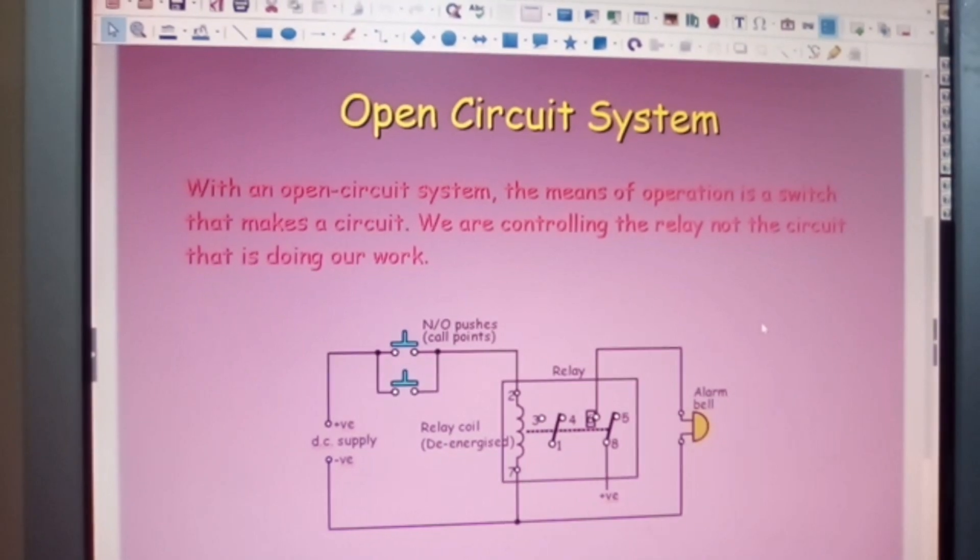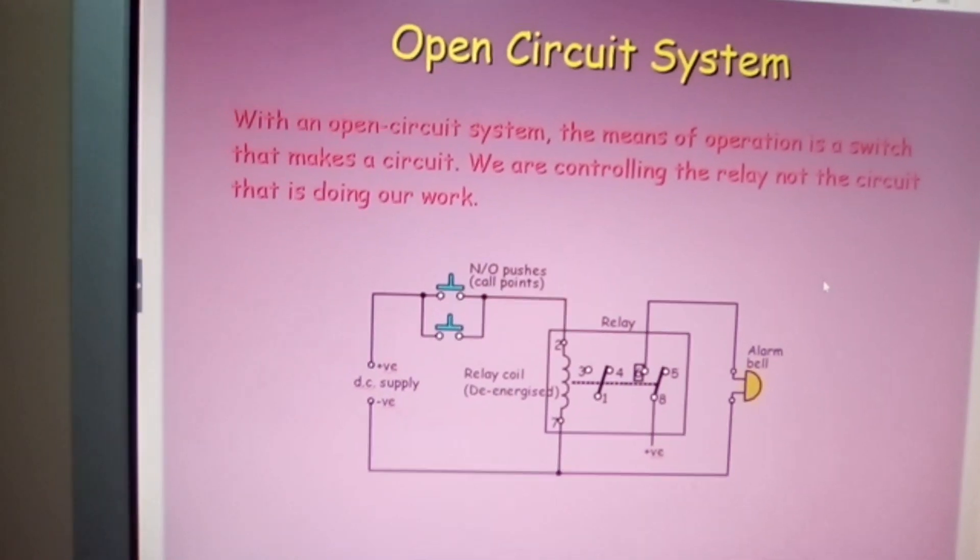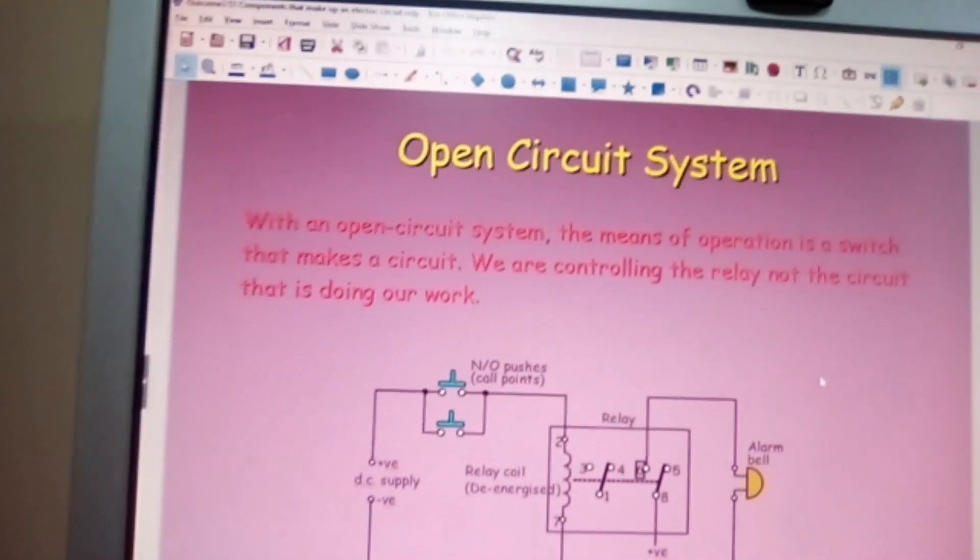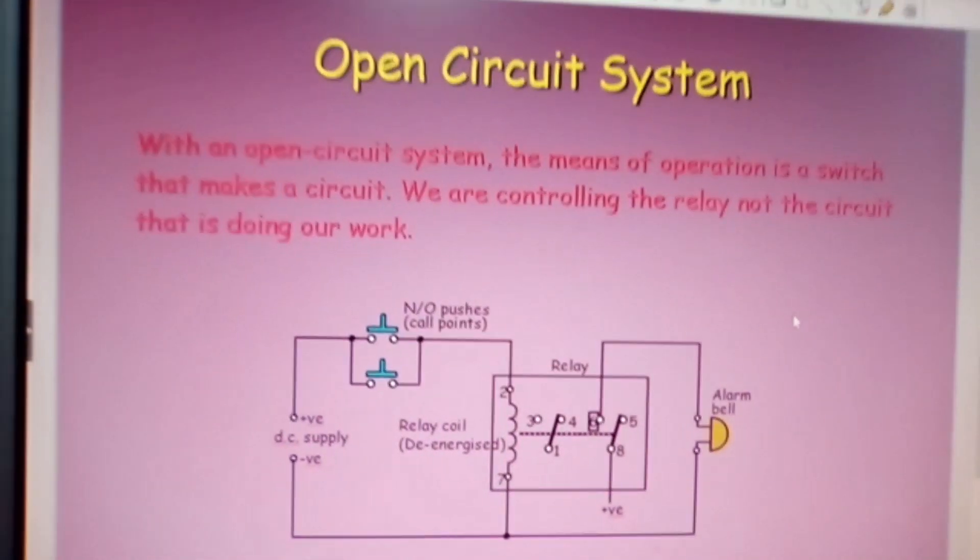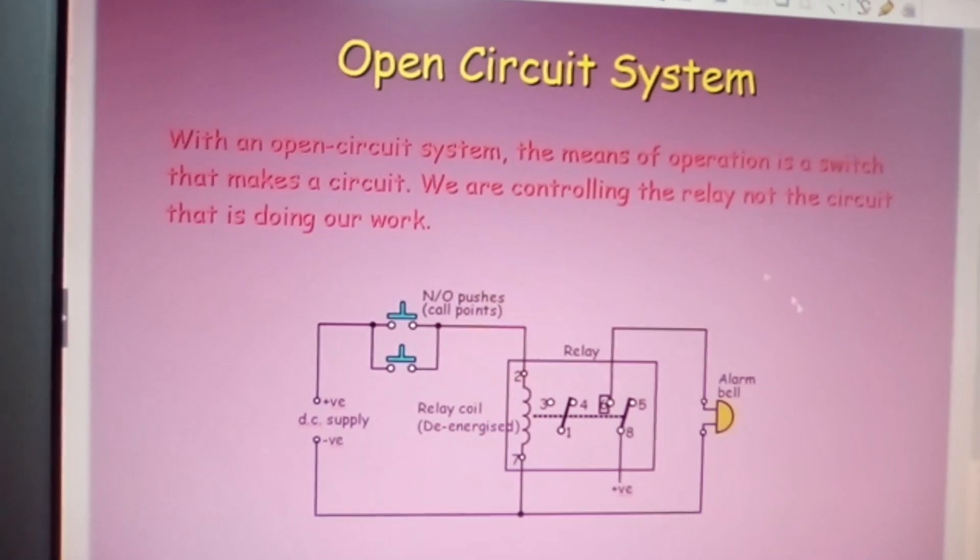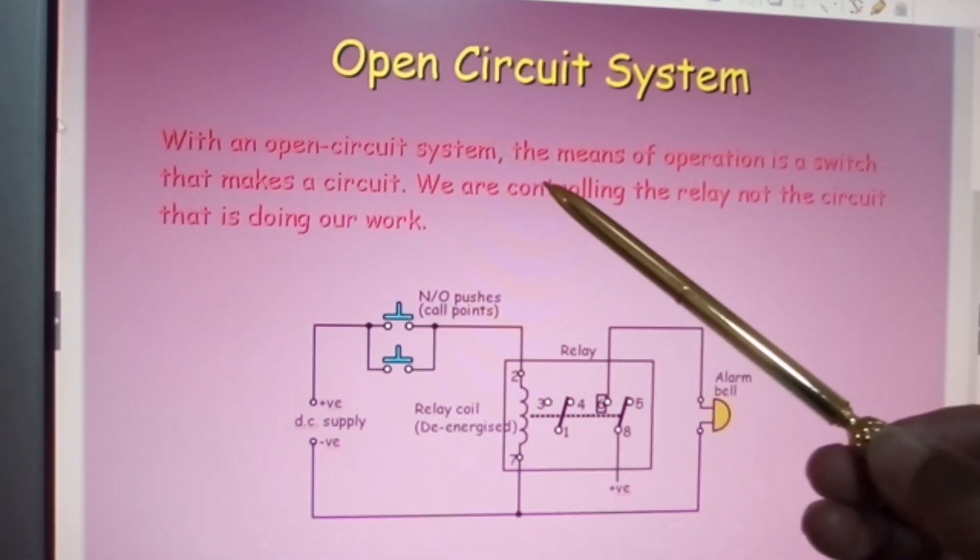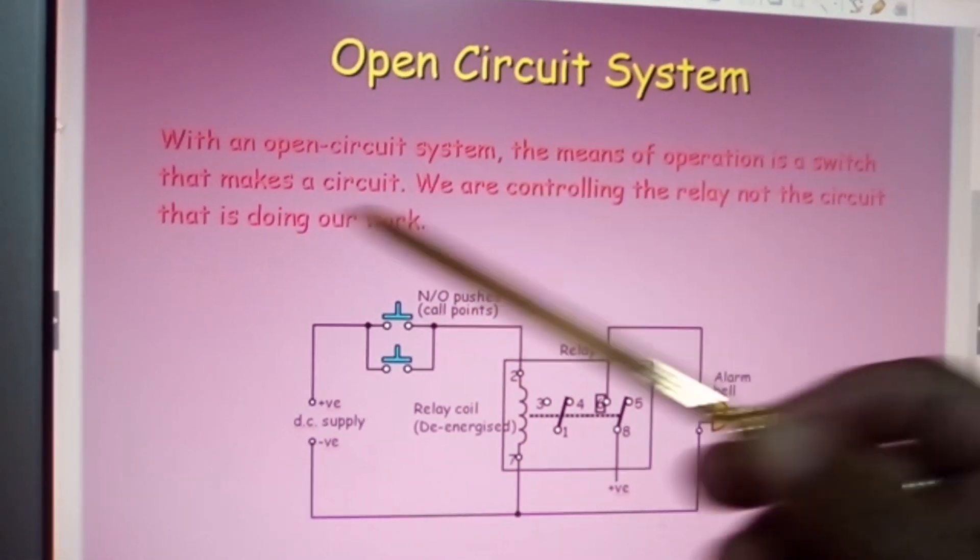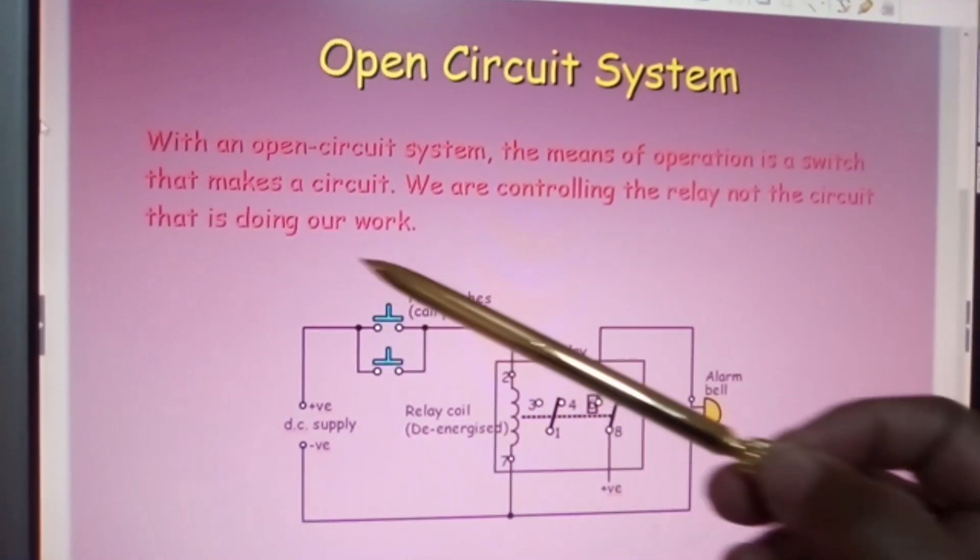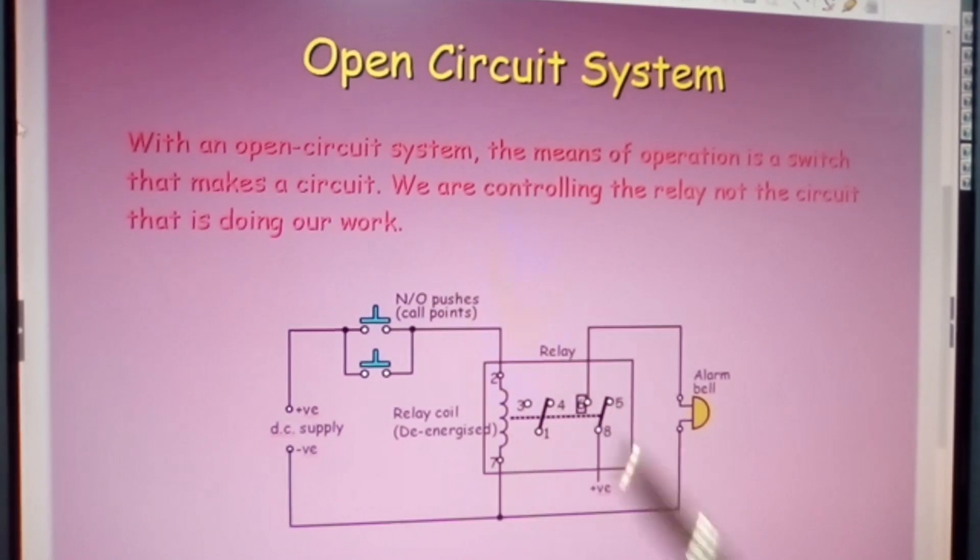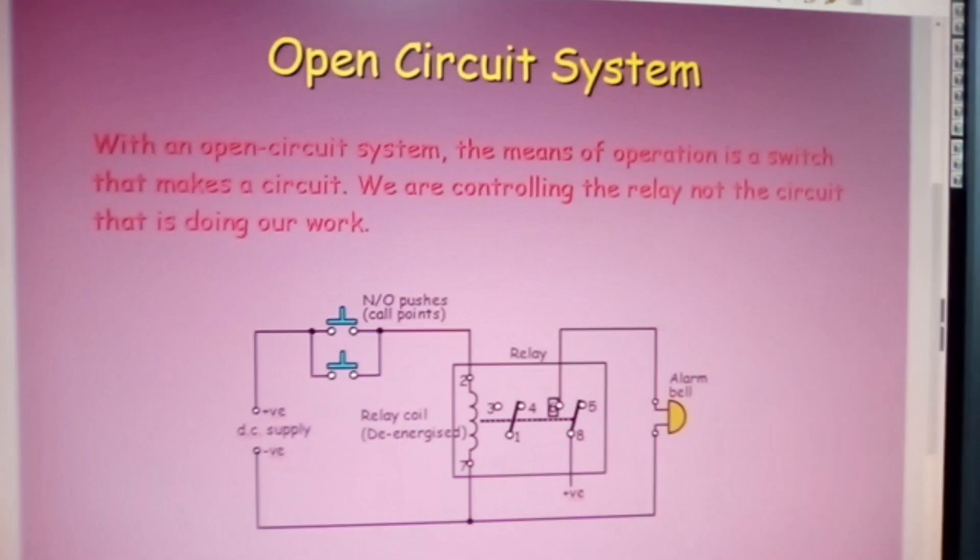Open circuit system. With an open circuit system, the means of operation is a switch that makes a circuit. We are controlling the relay, not the circuit that is doing our work. So what we're actually doing here, we're just controlling the relay itself.